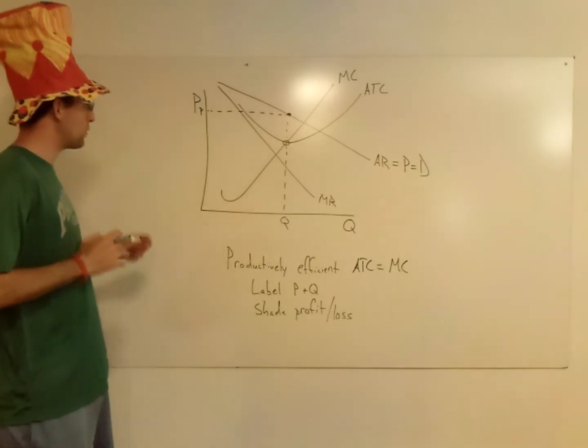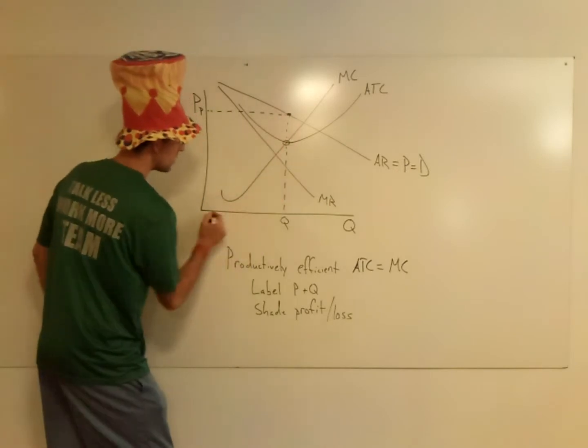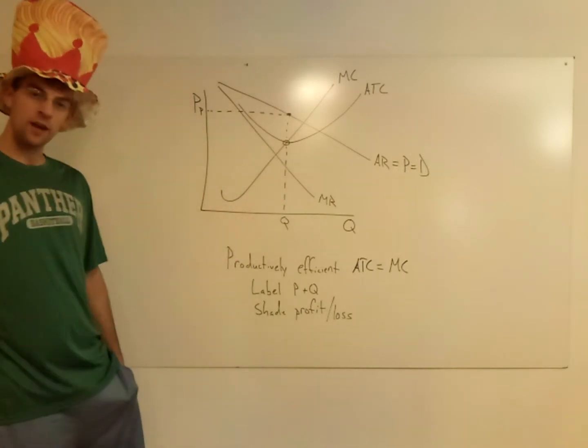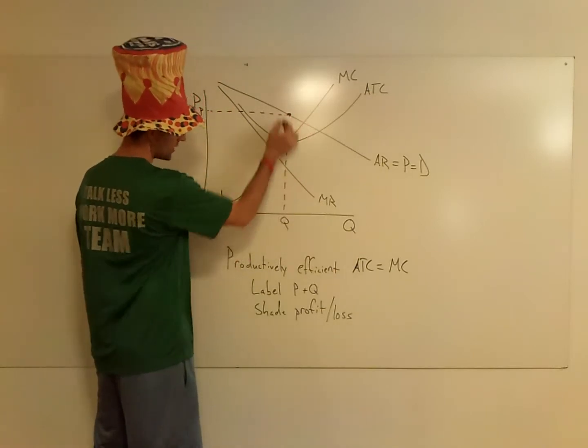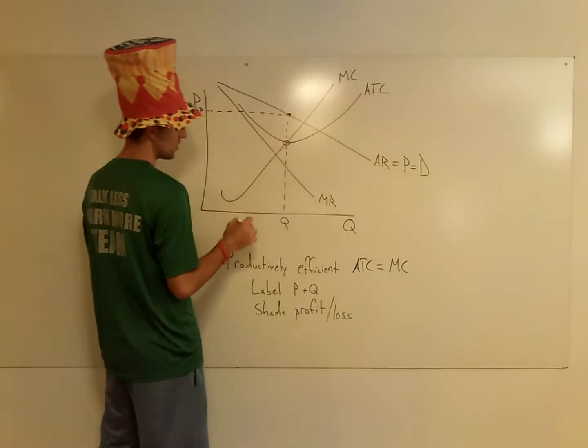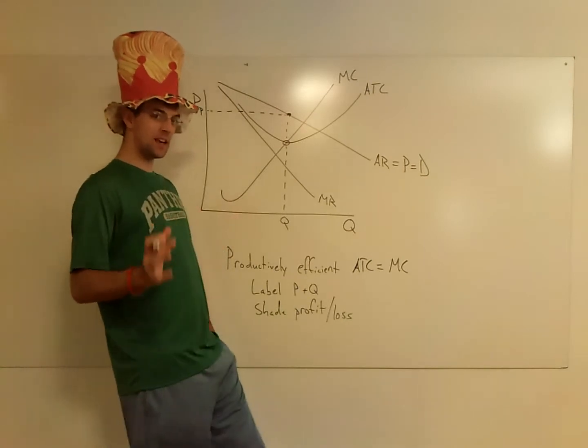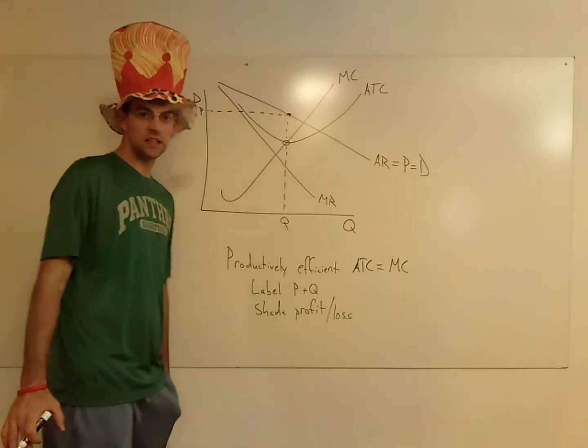Now I have to find my profit. Well, this whole box here, price times quantity, is my total revenue. Now I need to find my ATC at this quantity, which is right there. It is circled. And in this case, you can use or do use the minimum of ATC, but for the most part you stay away from it.